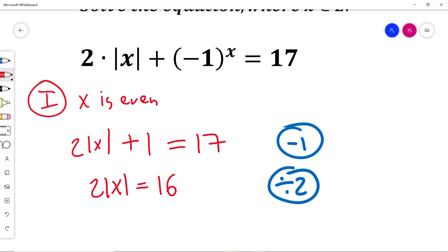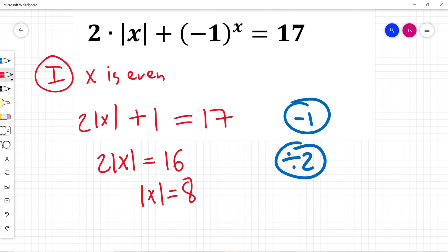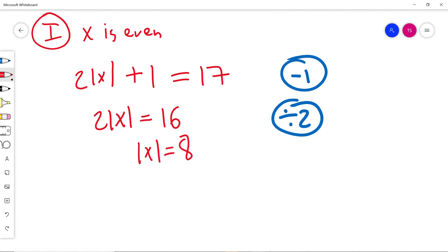When absolute value of x is equal to 8, x is just 8, or x is negative 8. And I can see my answers are even.